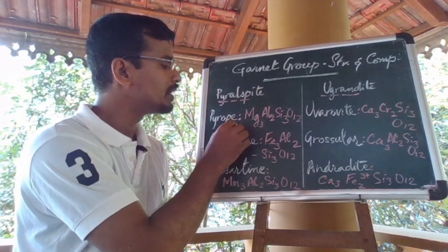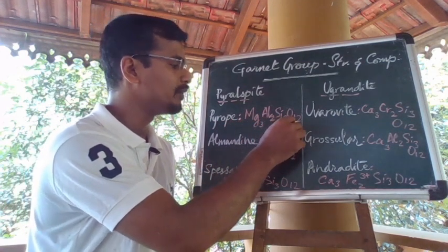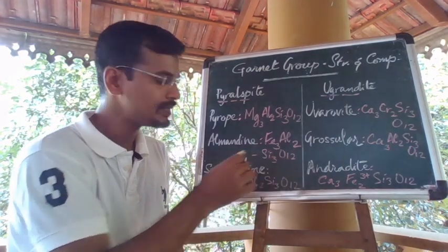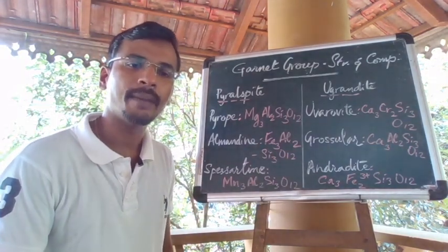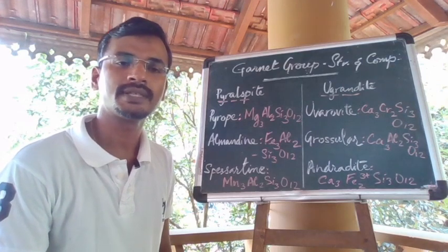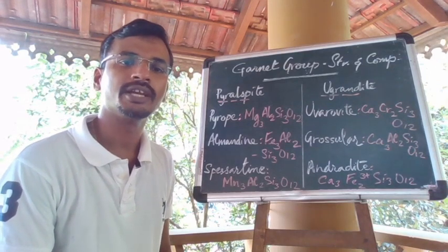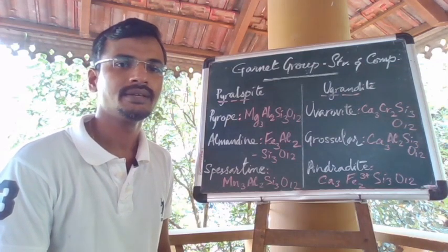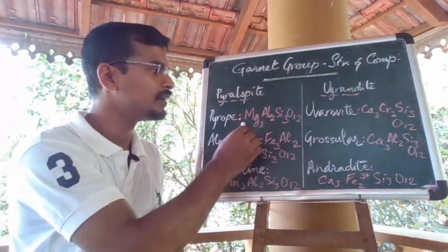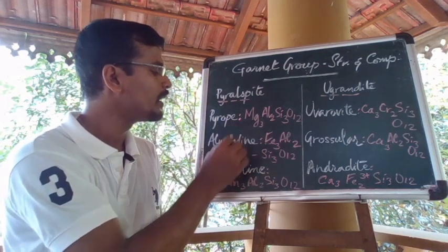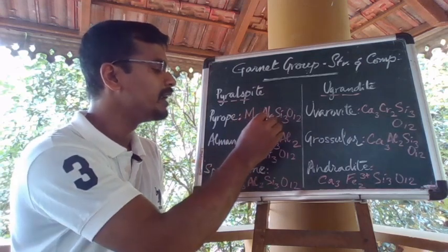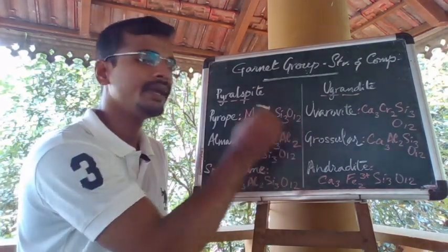Pyrope has a general formula of Mg3Al2Si3O12, almandine has a general formula of Fe3Al2Si3O12, and spessartine is Mn3Al2Si3O12. In each case, one of the divalent cations — magnesium, iron, or manganese — occupies the X-site, aluminium always occupies the octahedral Y-site, and the formula is completed by Si3O12.